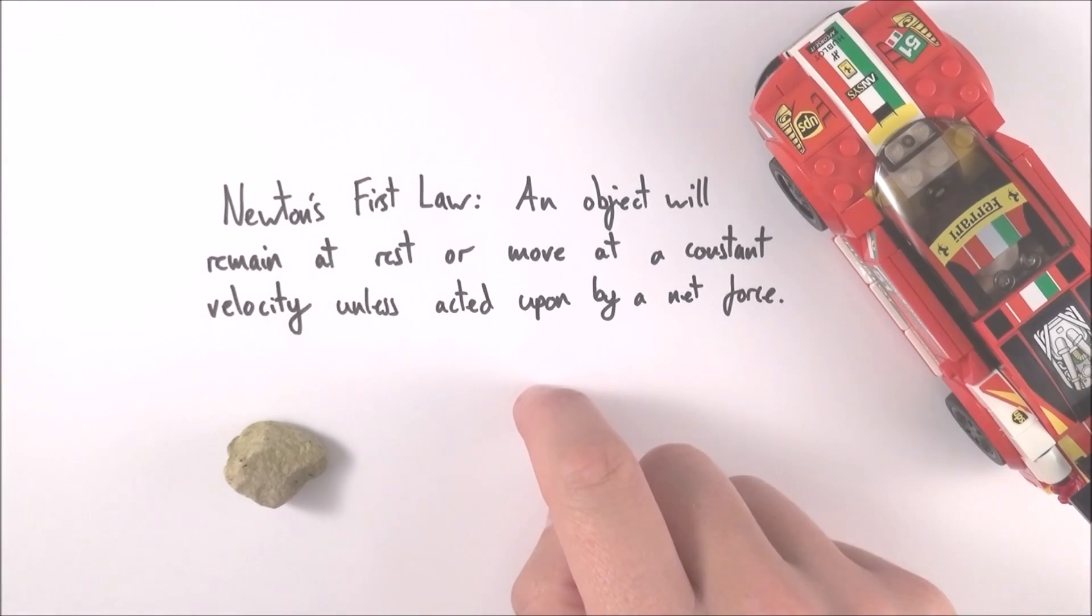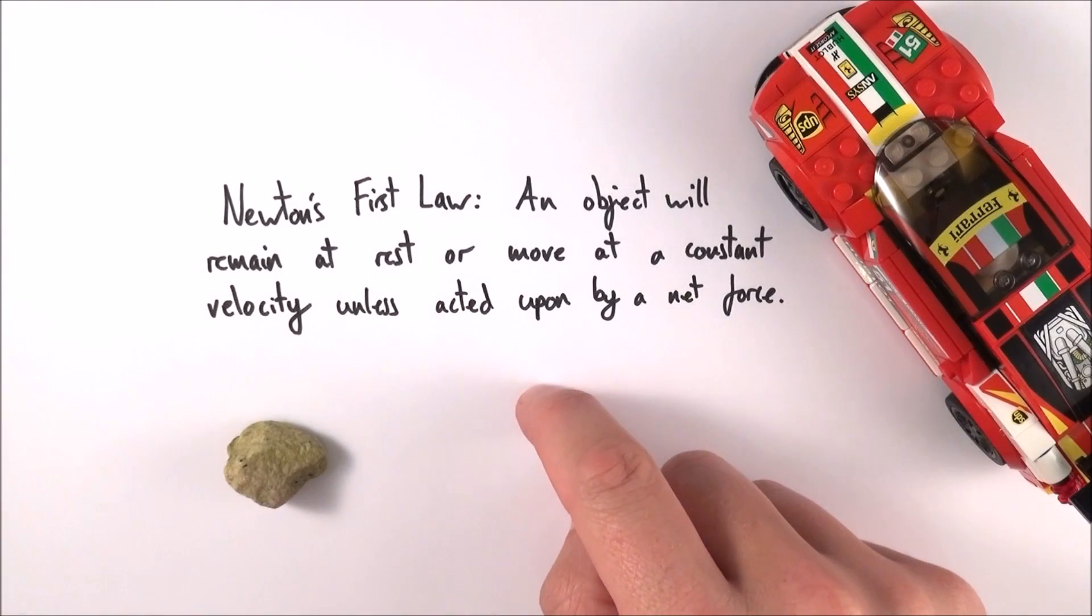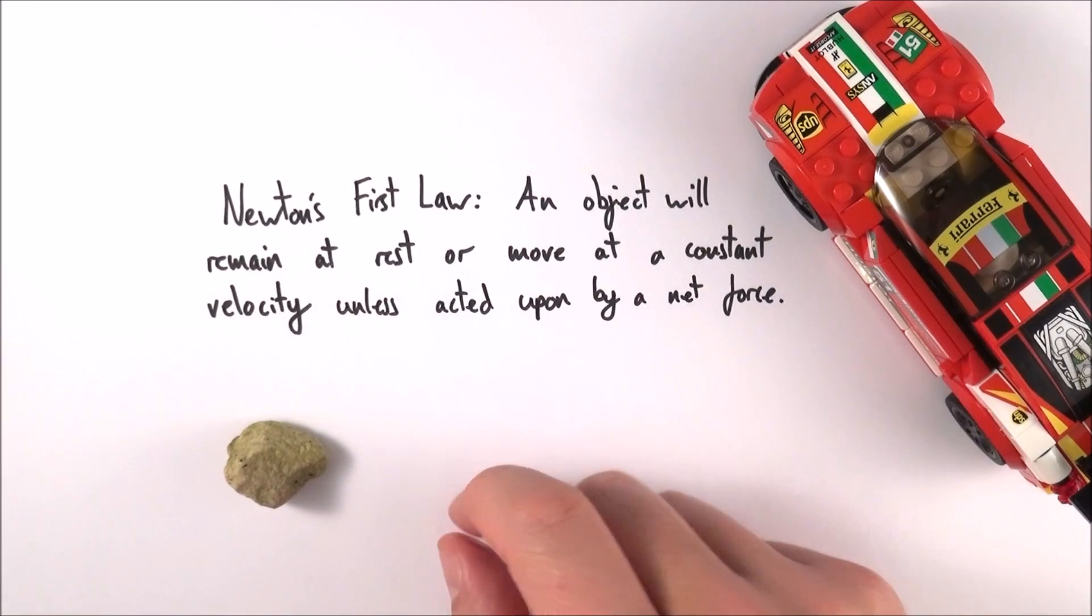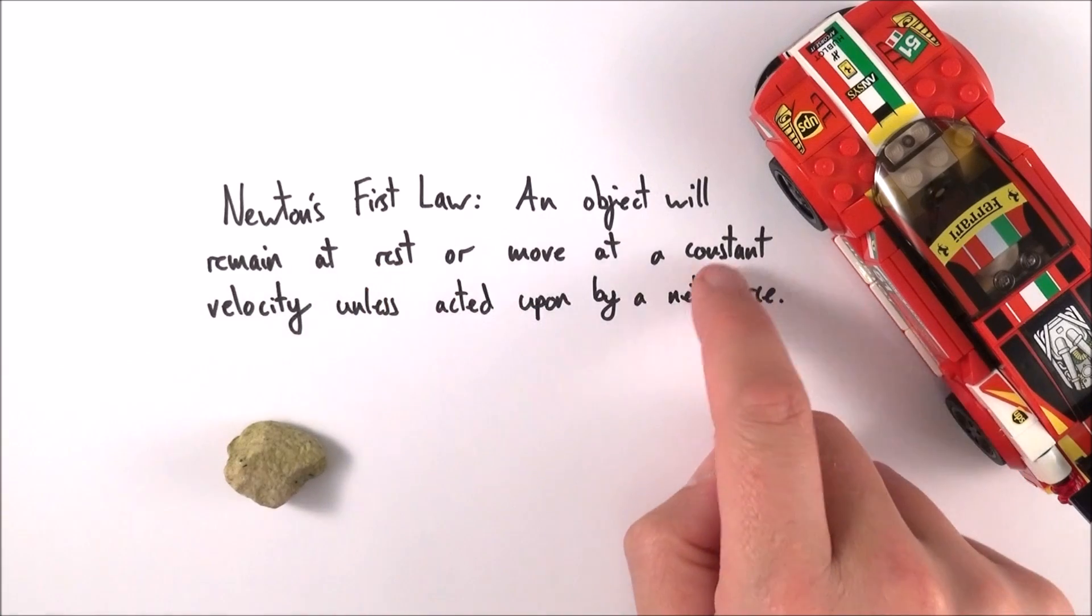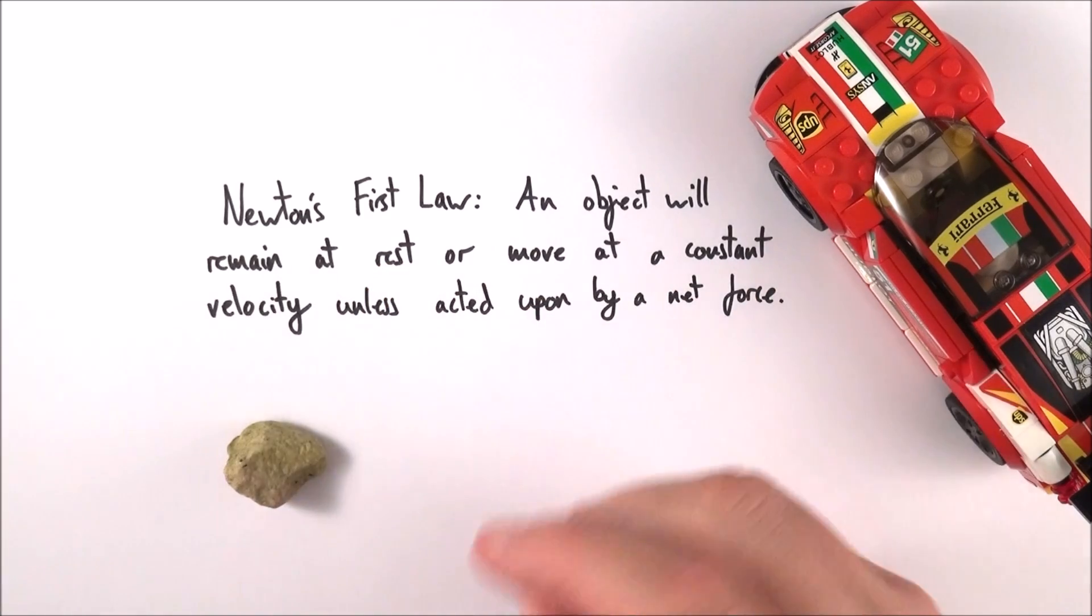This is all summarized really nicely in Newton's first law from 1687, so a long time ago. And he basically said that an object will remain at rest, or it will move at a constant velocity, unless acted upon by a net force.